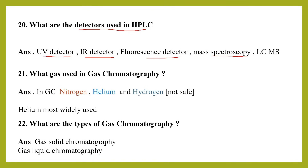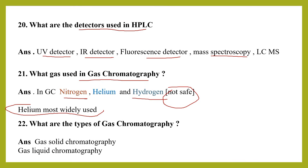What gas is used in gas chromatography? Helium is widely used in gas chromatography. Other gases used include nitrogen and hydrogen, though hydrogen is not preferred because it is not safe.